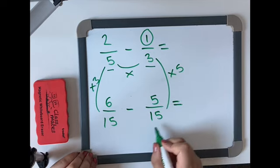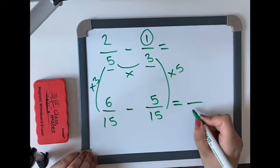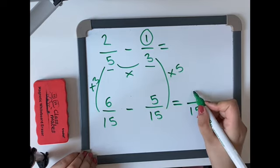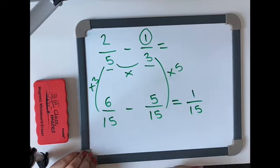Now the denominators are both the same so we can easily subtract it. 6 take away 5 is 1. Our answer is 1 fifteenth.